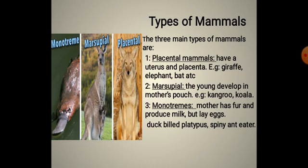The three main types of mammals are placental mammals, marsupial mammals, and monotremes. Placental mammals have a uterus and placenta — for example, giraffes, elephants, and bats. Marsupial mammals' young develop in the mother's pouch — for example, kangaroos and koalas. Monotremes have fur and produce milk but lay eggs — for example, the duckbill platypus and spiny anteater.